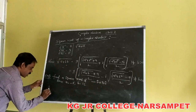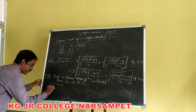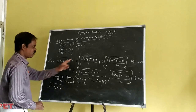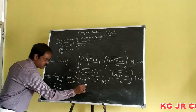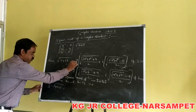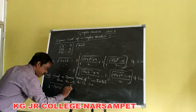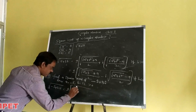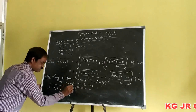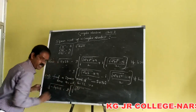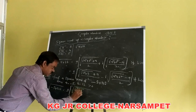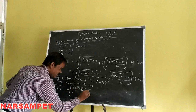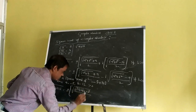Now the square root of minus 5 plus 12i: since b equals 12 which is greater than 0, we apply the first formula. It gives plus or minus of square root of (square root of A squared plus B squared plus A) divided by 2, where A squared equals minus 5 squared equals 25, and B squared equals 12 squared equals 144.